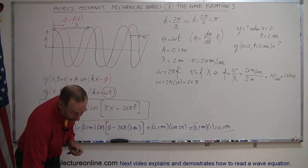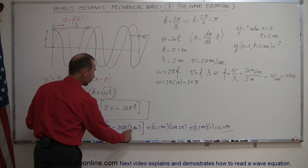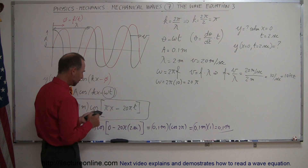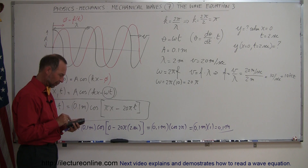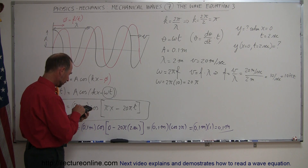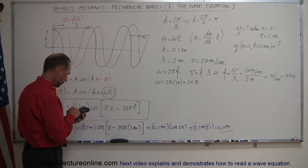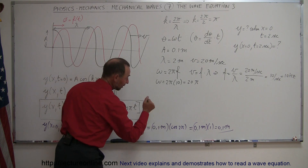You can verify this on a calculator: put it in radian mode, then compute cos(40π), which gives exactly 1. So 1 × 0.1 meters gives you 0.1 meters. This confirms the equation works correctly.